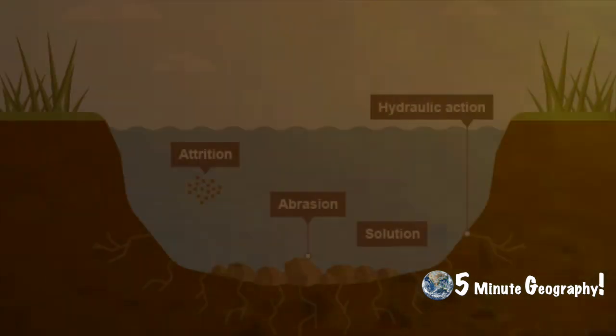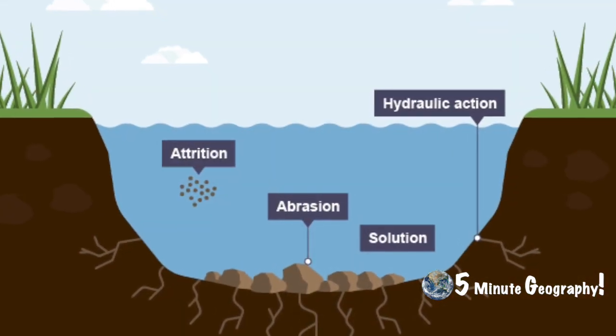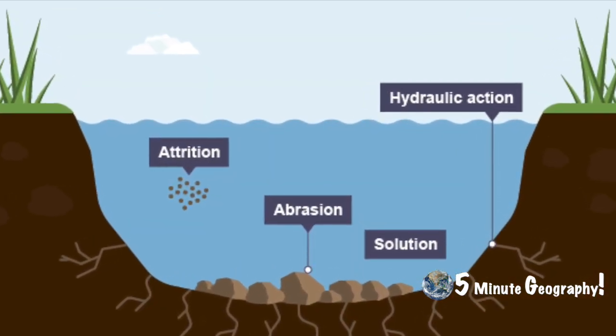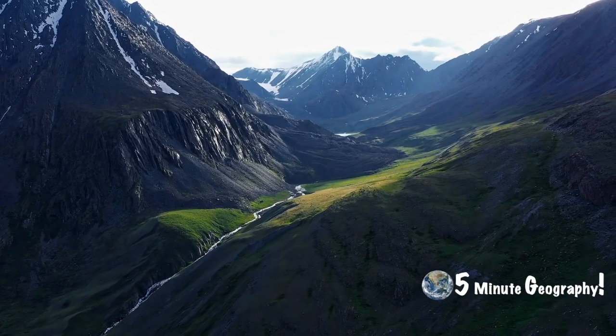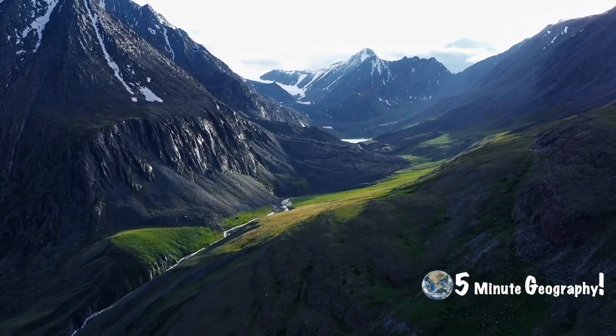Hydraulic action is simply the pure force of the moving water. Abrasion occurs when the river uses rocks and other debris to further break down the riverbank and bed. Attrition is when those rocks bang off each other. And solution refers to when rock is dissolved by a chemical reaction within the water. These processes help shape the landscape, and one of the features formed by erosion is a waterfall.